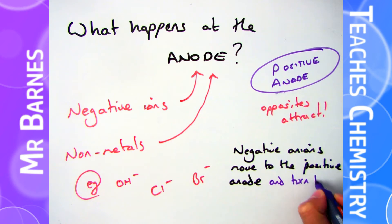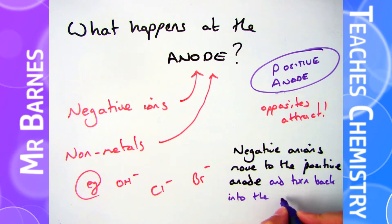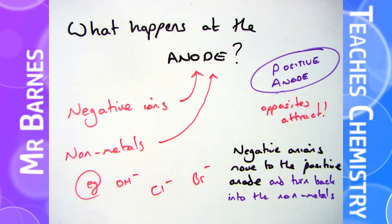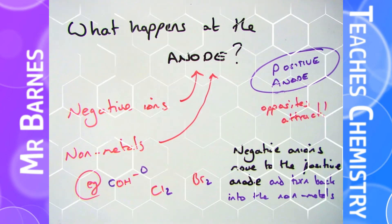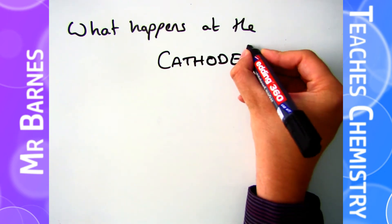What happens then is they turn back into their original element. Your chlorine ions turn back into chlorine gas, and so on — they turn back into the non-metal they were before they became part of the ionic compound. Chlorine turns back into Cl₂, bromine turns back into Br₂, and OH⁻ — that's a trickier one — turns back into oxygen O₂ and water H₂O.